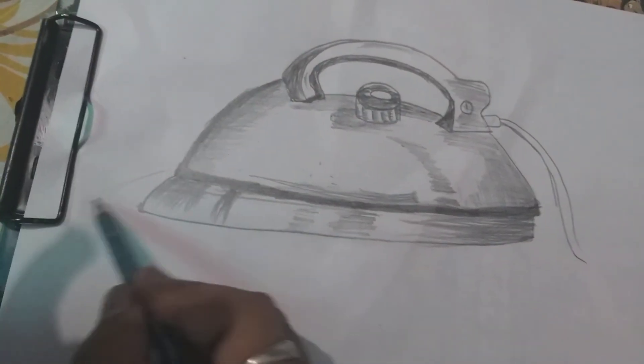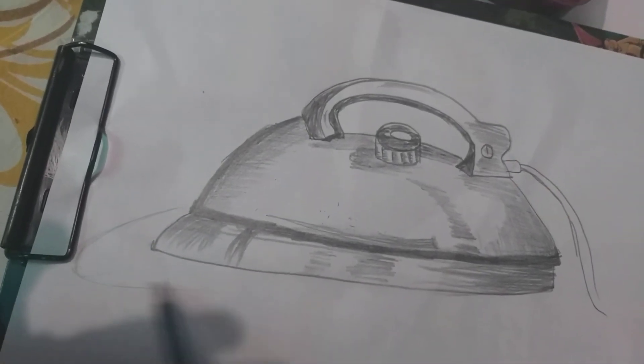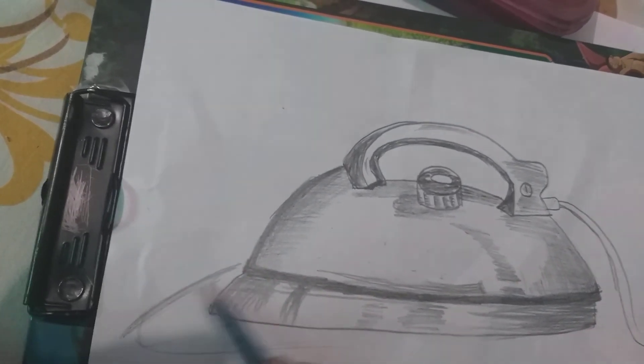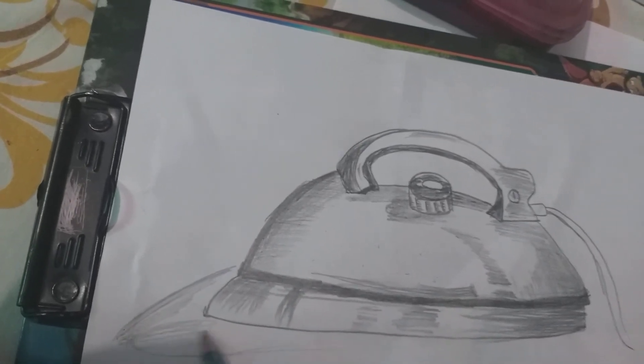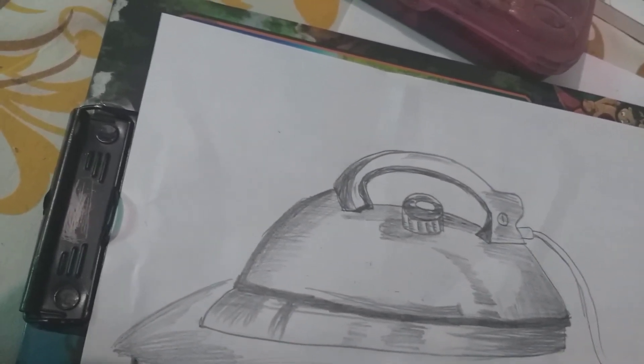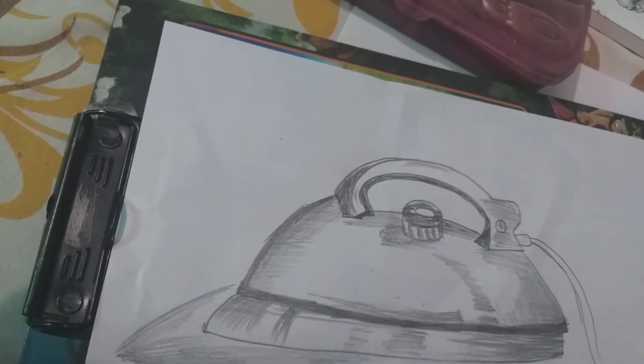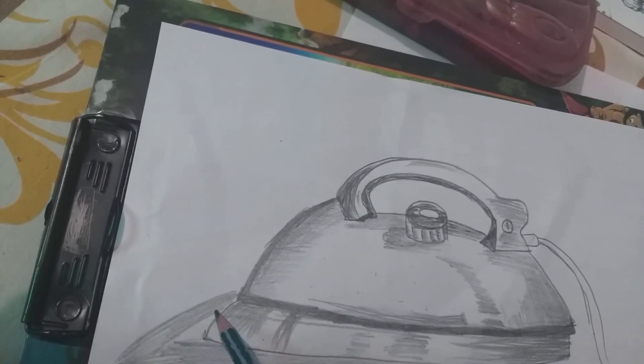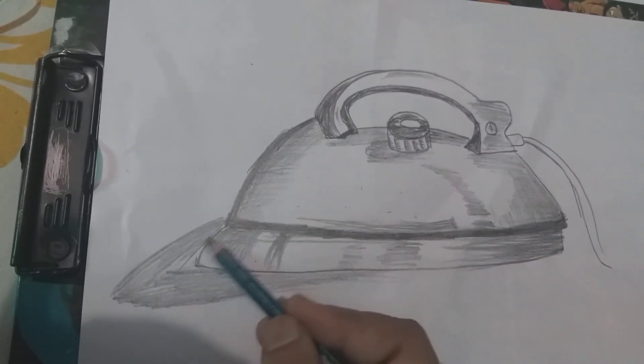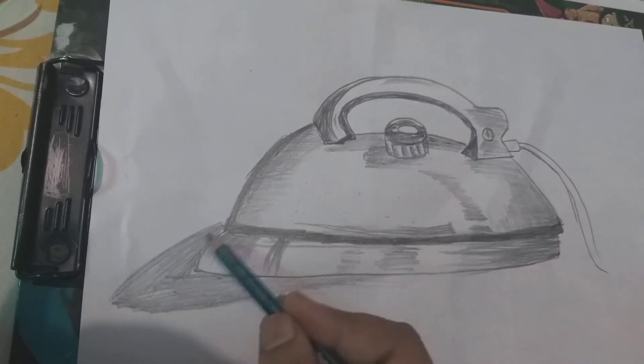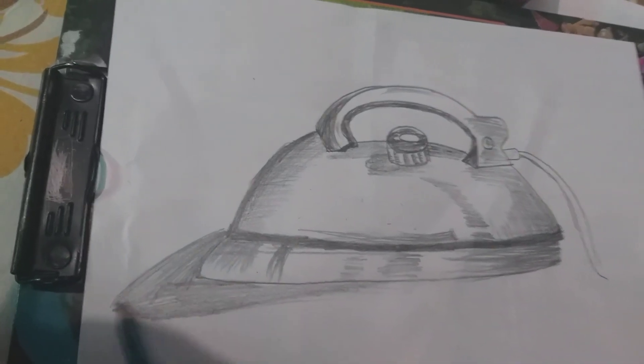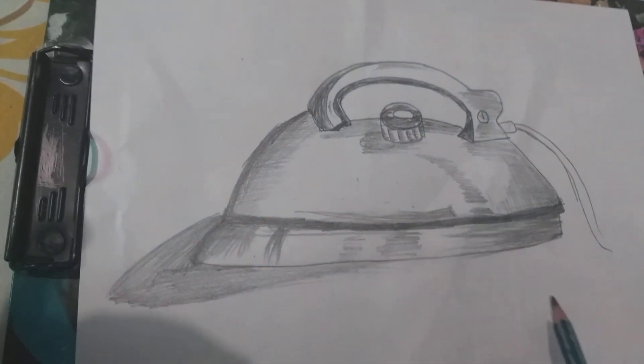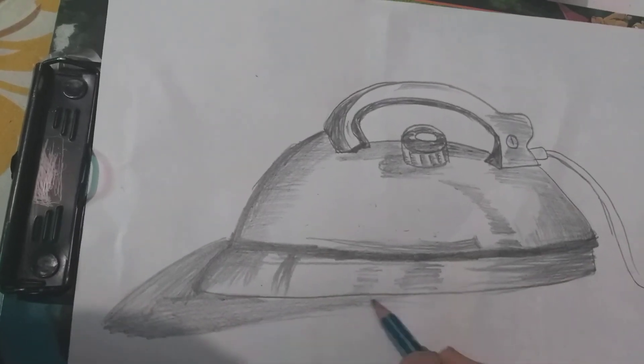And now I am going to make the shadow of the object, shadow of the iron here. And now I am going to highlight all the parts.